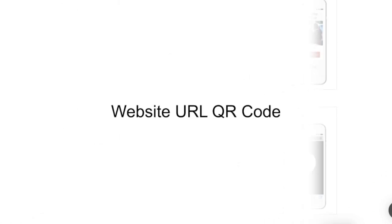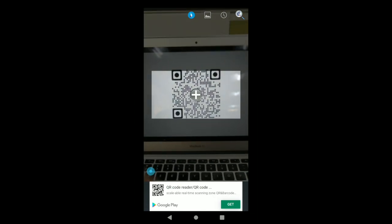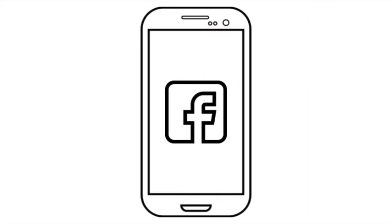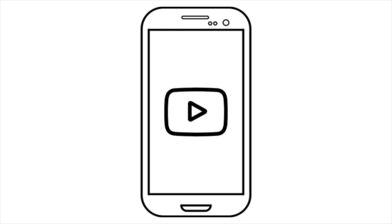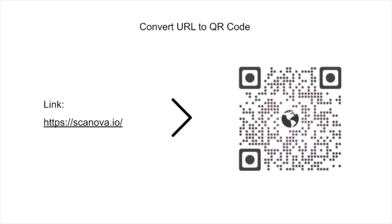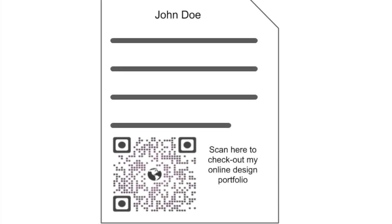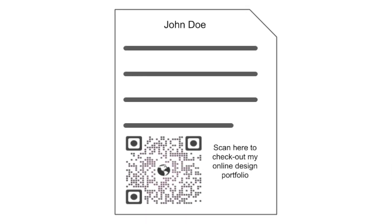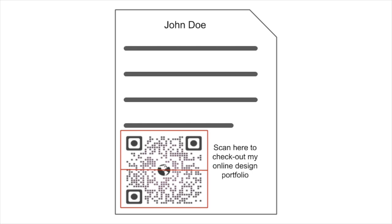1. Website URL QR Code. This is probably the most common QR code category. A website URL QR code, when scanned, simply redirects people to your website or promotional web page. It could literally be any URL — your Facebook page, Instagram profile, LinkedIn profile, or even a YouTube video. For example, a designer looking for a job will probably add a website QR code on her resume that links to her online design portfolio. If the recruiter wants to see her designs, he can simply scan the QR code and see it.